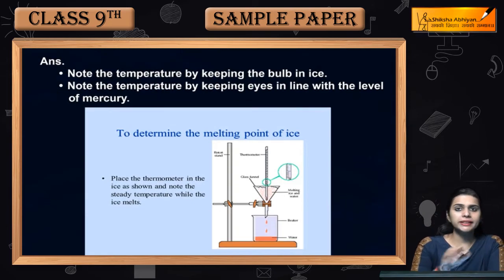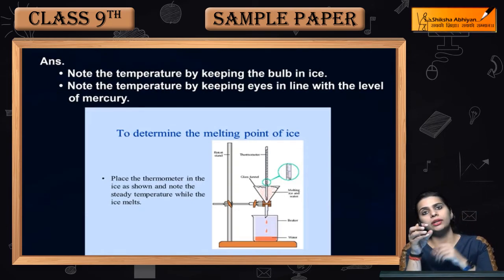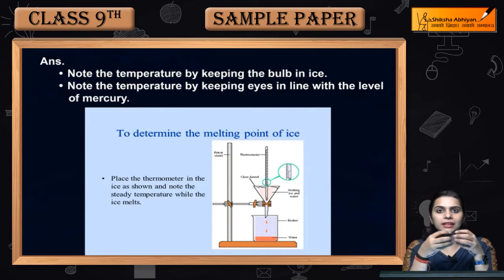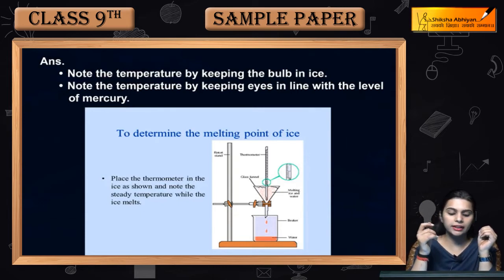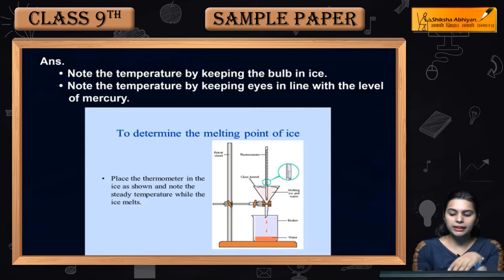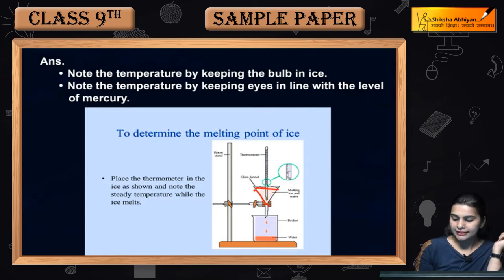When you have to calculate the reading, here we are talking about the ice melting point. If we want to see the melting point of ice, then what will we do? Note the thermometer by keeping the bulb in ice. First of all, this figure in front of you, we took the ice.